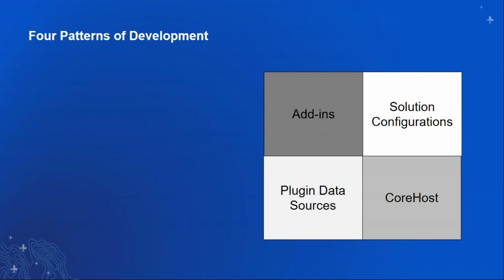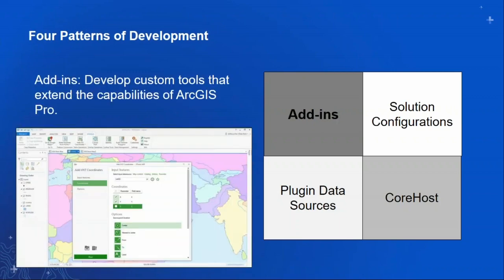Currently there are four separate patterns of development — four different kinds of tools you can create using the Pro SDK. If you think of another pattern that fits your requirements, you can submit ideas at ideas.arcgis.com. The first pattern is an add-in, and this is probably the most common use of the Pro SDK. It allows you to create your own custom tools and toolbars.